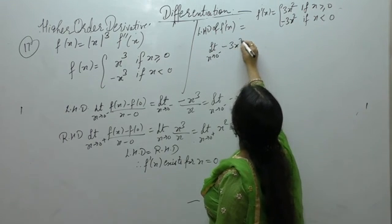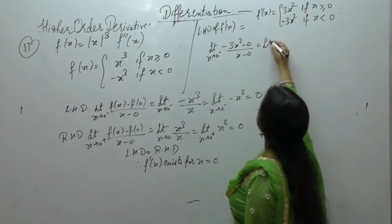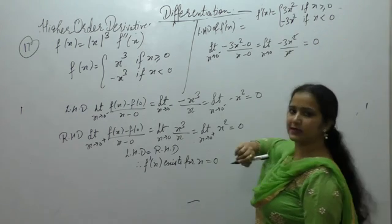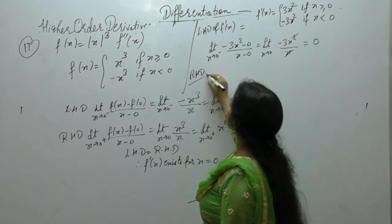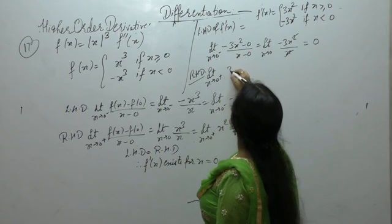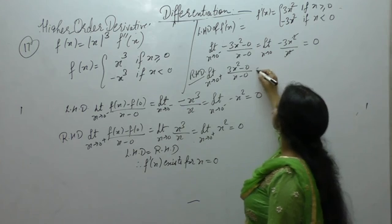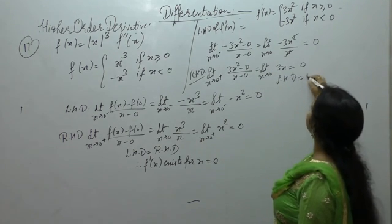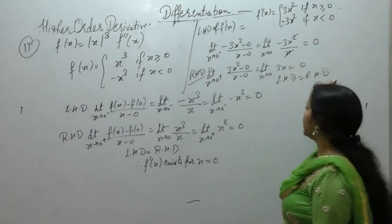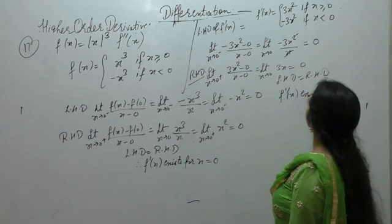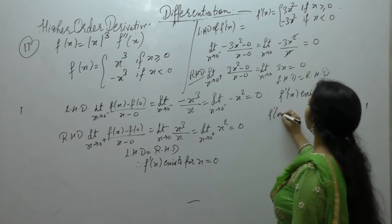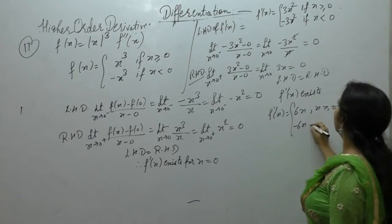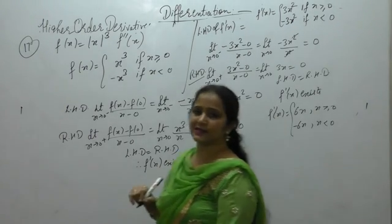Left hand derivative for f'(x): limit x tends to 0 negative, (minus 3x² minus 0) upon (x minus 0) gives minus 3x, which is 0. Right hand derivative: limit x tends to 0 positive, 3x² upon x gives 3x, which is also 0. Since left hand derivative equals right hand derivative for f'(x), the second order derivative exists. Its value is 6x if x is greater than or equal to 0, and minus 6x if x is less than 0.